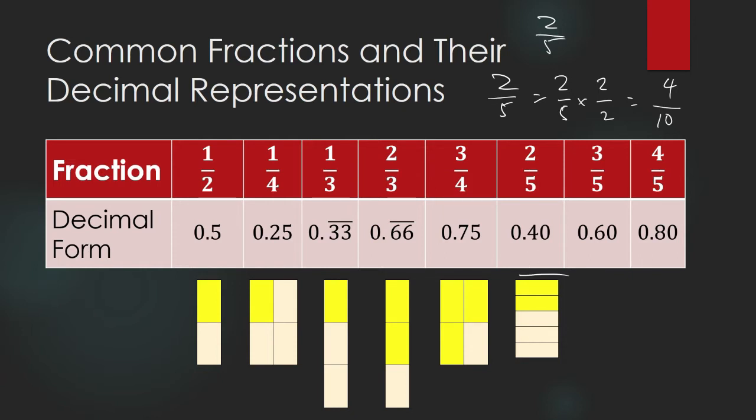Or you can write it as 2 over 5 because this one is 0.40. This is like 40 hundredths. So, you can also write it in this way: 2 over 5 times 20 over 20. 2 times 20 is 40, and 5 times 20 is 100. So, 40 over 100, or 40 hundredths.